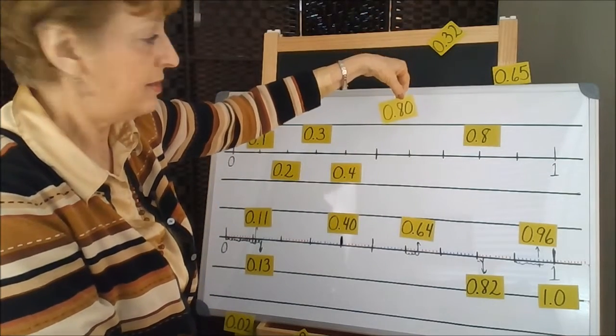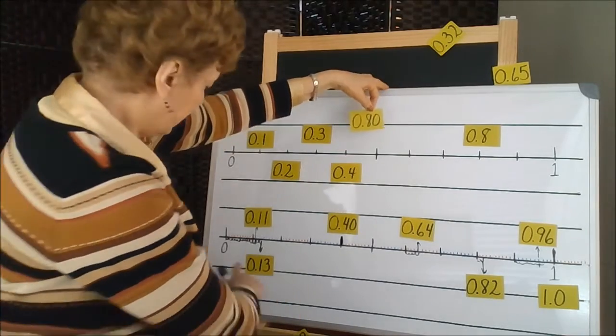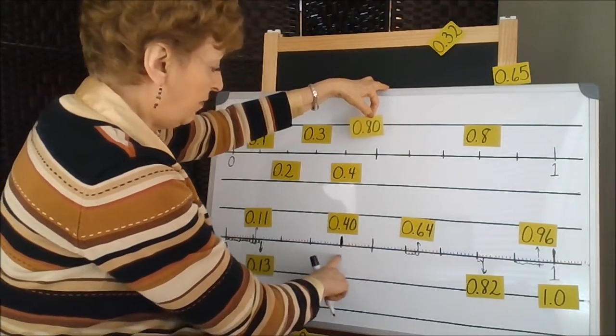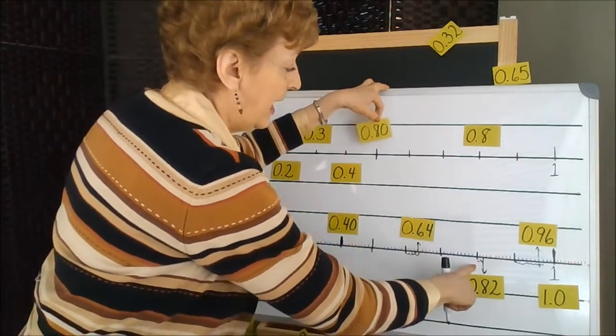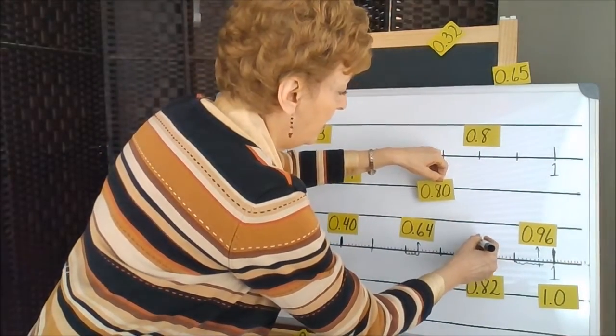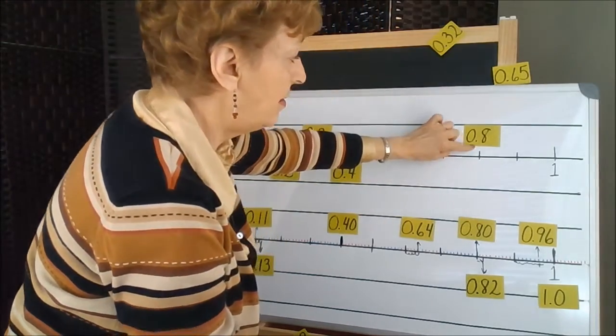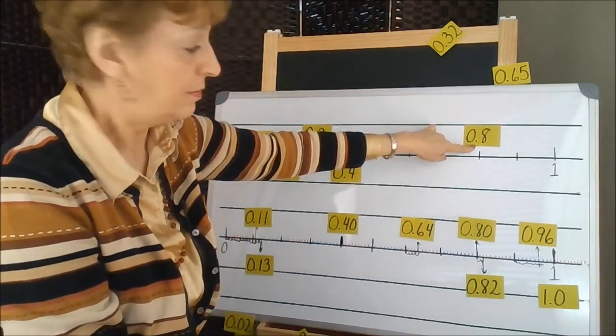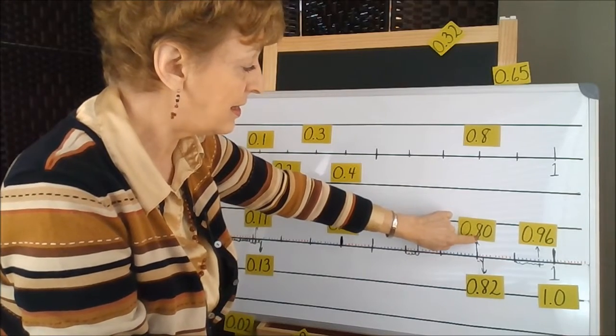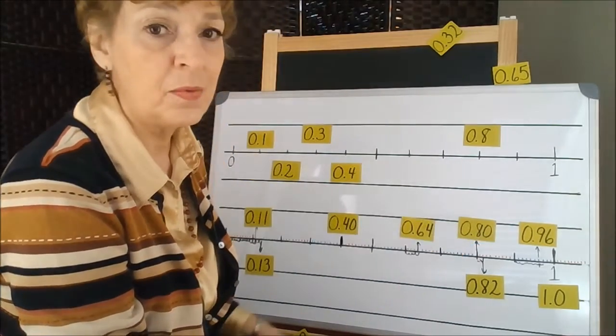80 hundredths. We just can count by tens on this one: 10, 20, 30, 40, 50, 60, 70, 80. That goes here, and it looks a lot like the one we placed here, the eight tenths, because the eight is in the tenths position, and there are no ones.